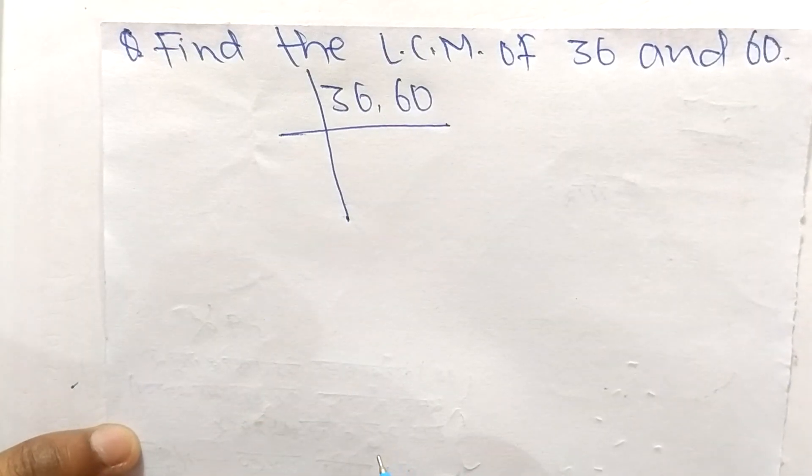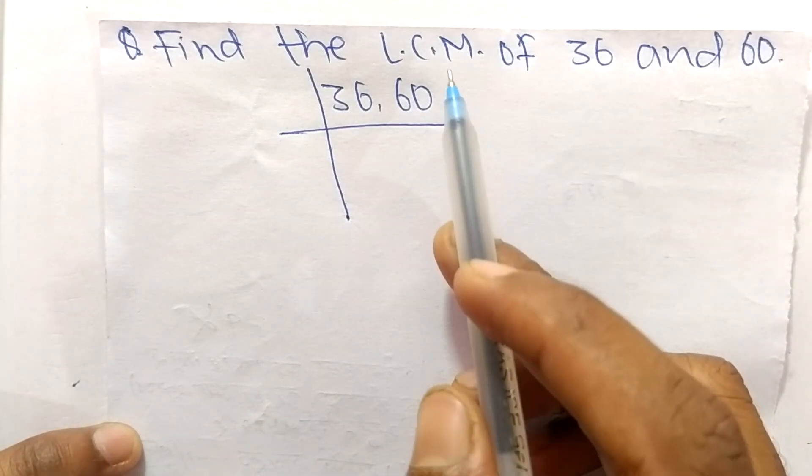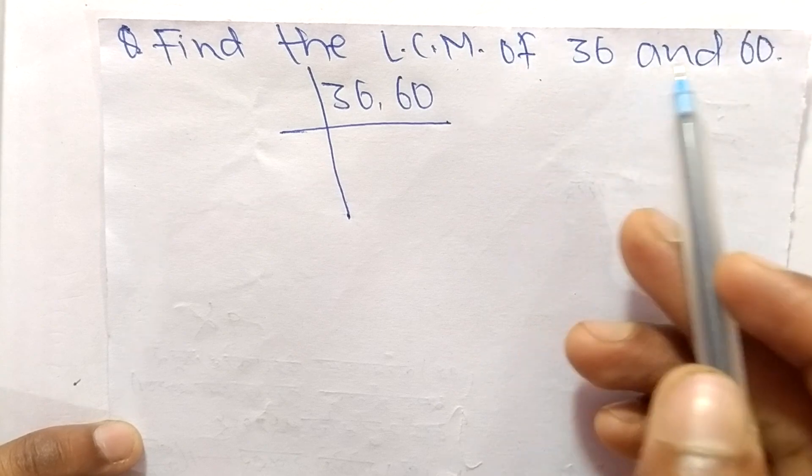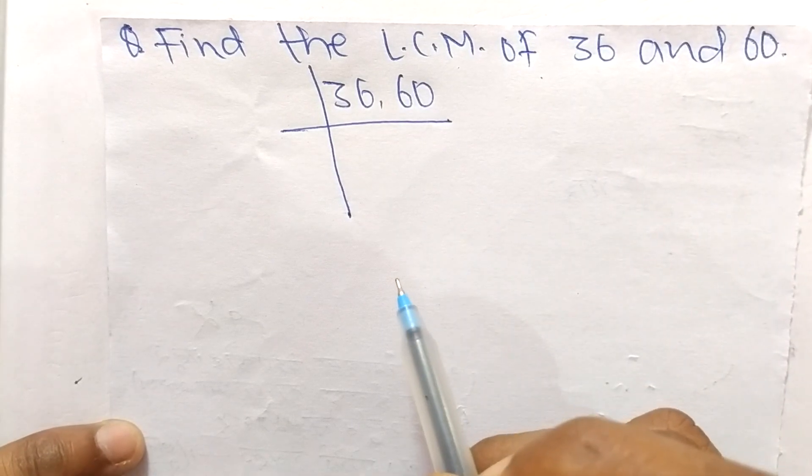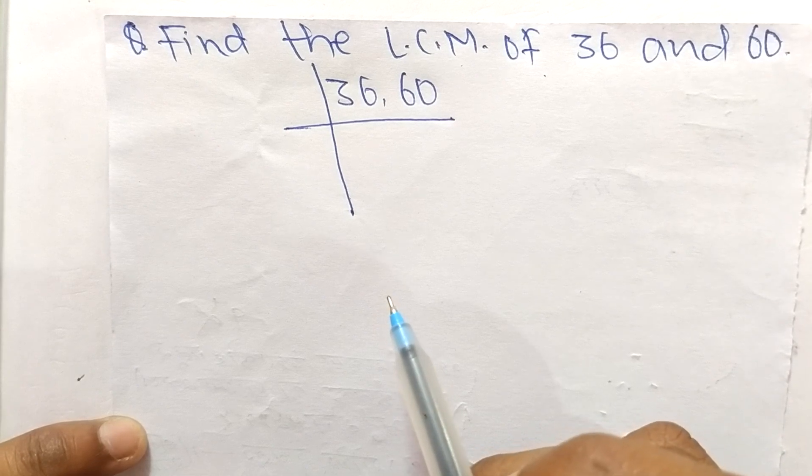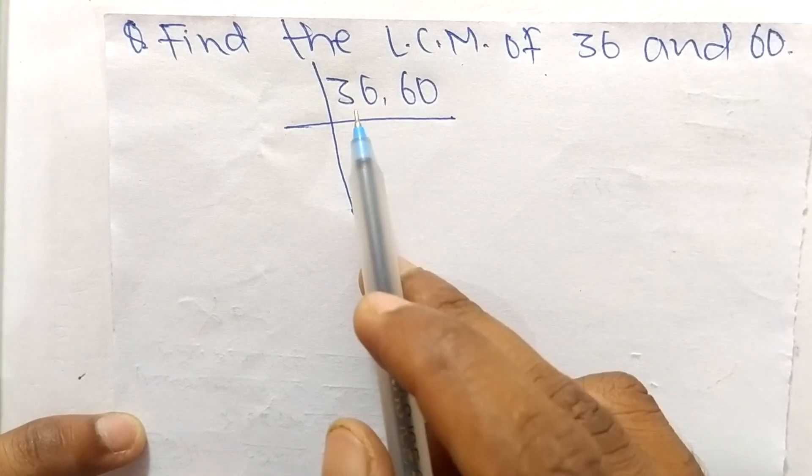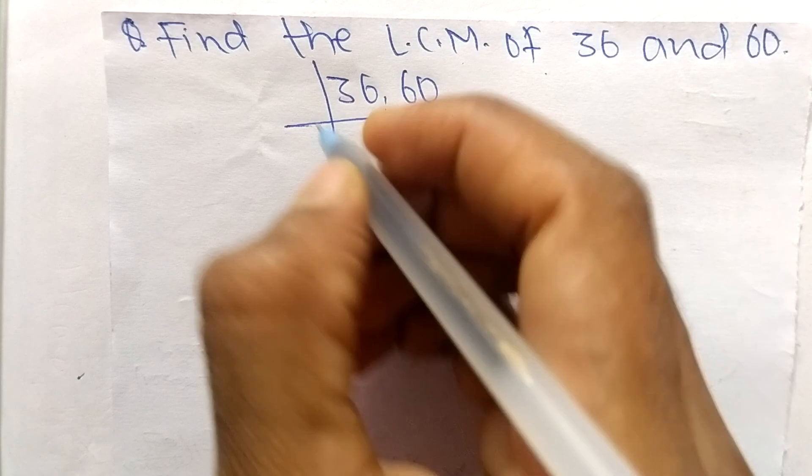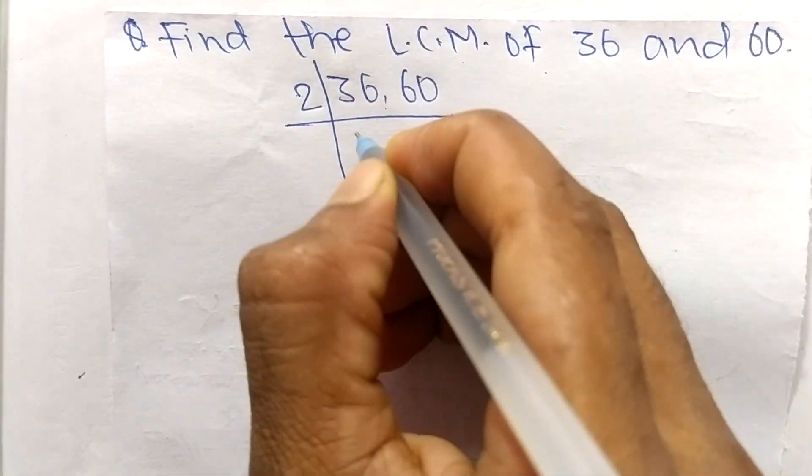Today in this video we shall learn to find the LCM of 36 and 60. To find LCM, first of all we choose the lowest number that can exactly divide 36 and 60, so the number is 2.